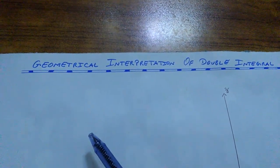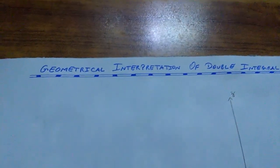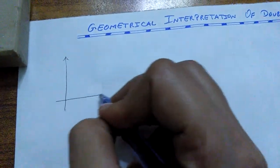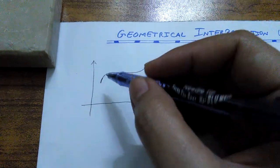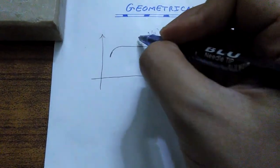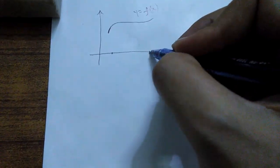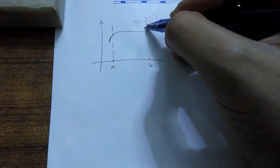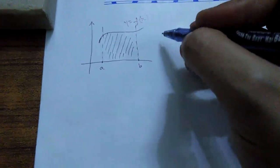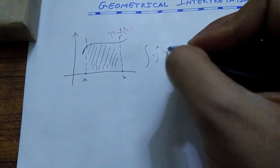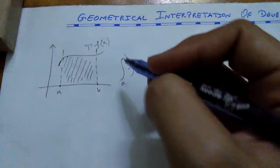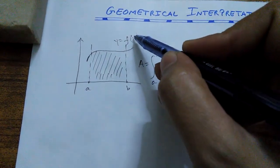In one of my previous videos, we covered the geometrical interpretation of univariate integration. Over there, we tried to understand that if a certain function f of x is continuous on a closed interval [a, b], and if your function f of x has a certain curve when plotted on a two-dimensional coordinate system, then the area under the curve over that closed interval can be easily evaluated by the help of a single integral. So a definite single integral helps in determining the area under the curve representing f of x.